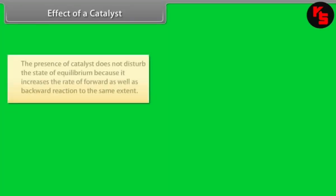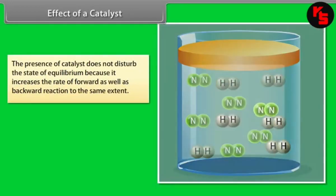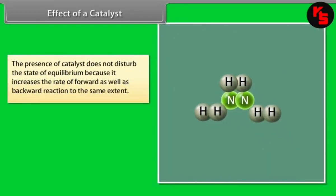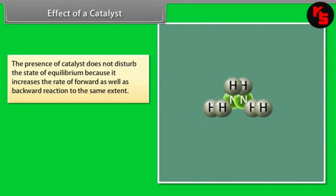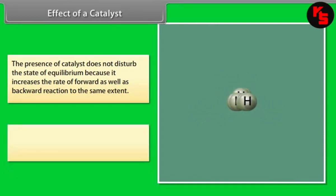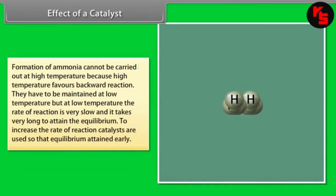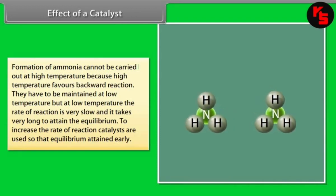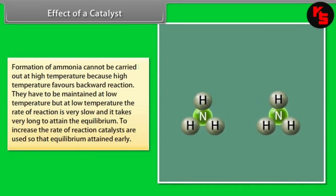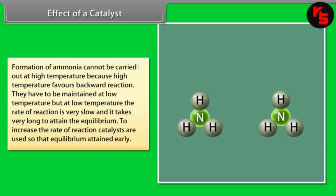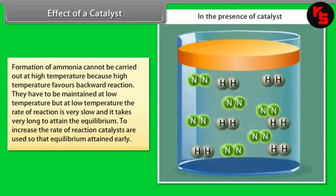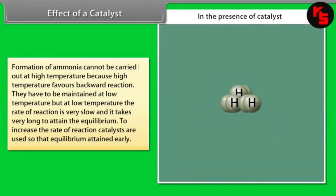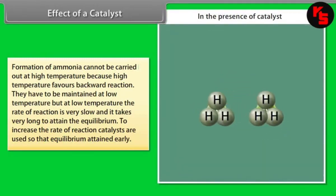Effect of a Catalyst. The presence of a catalyst does not disturb the state of equilibrium because it increases the rate of both the forward and backward reactions to the same extent. Formation of ammonia cannot be carried out at high temperature because high temperature favors the backward reaction. At low temperature the rate of reaction is very slow. To increase the rate of reaction, catalysts are used so that equilibrium is attained earlier.